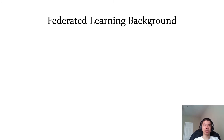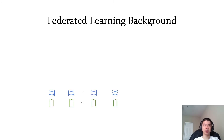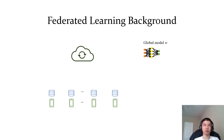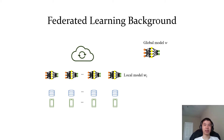Let's first talk about some background about federated learning. In federated learning, there are some clients. Each client has some data. There is also a cloud server. The server maintains a model called the global model. Each client maintains a model locally called a local model.